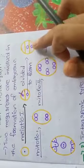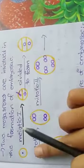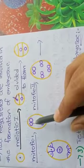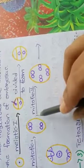Basically, these cells are involved in the meiotic division one, which results in 4 cells.